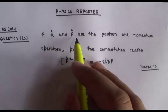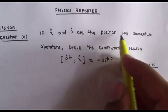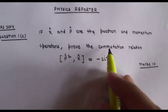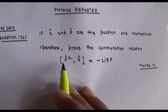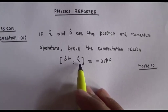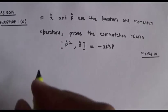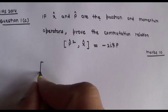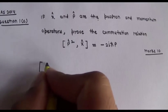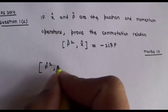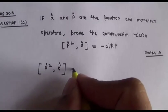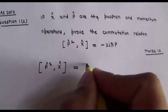If x̂ and p̂ are the position and momentum operators, prove the commutation relation between p̂ squared and x̂. We have to prove this relation [p̂², x̂]. We can expand it — p̂ squared comma x̂.